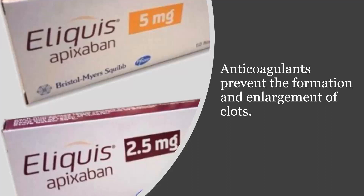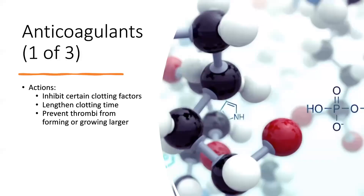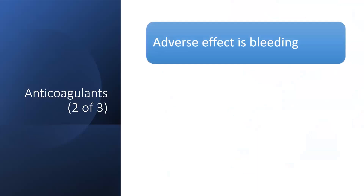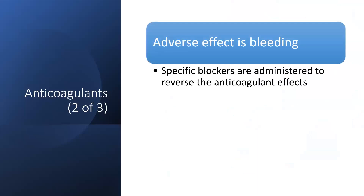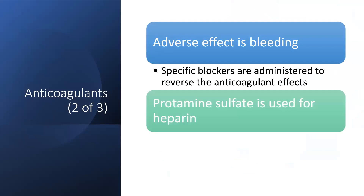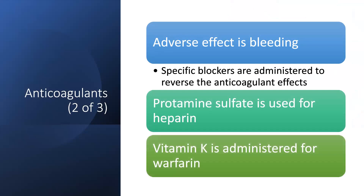Anticoagulants — for example, Eliquis (apixaban) — prevent the formation and enlargement of clots. They act by inhibiting certain clotting factors and always lengthen clotting time, preventing thrombi from forming or growing larger. The main adverse effect is bleeding. Specific blockers reverse anticoagulant effects: protamine sulfate is the antidote for heparin, and vitamin K is the antidote for warfarin.